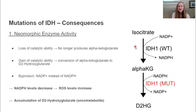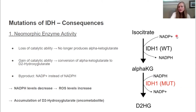The enzyme loses its ability to produce alpha-ketoglutarate and instead gains the catalytic ability of converting alpha-ketoglutarate to D2-hydroxyglutarate. This is referred to as neomorphic enzyme activity, because it loses one ability but gains another. Additionally, it no longer produces NADPH but instead produces NADP+. One consequence is that reactive oxygen species levels increase, because the enzymes responsible for reducing ROS are heavily dependent on NADPH. Low levels of NADPH lead to high levels of ROS, which have been linked to oncogenesis.